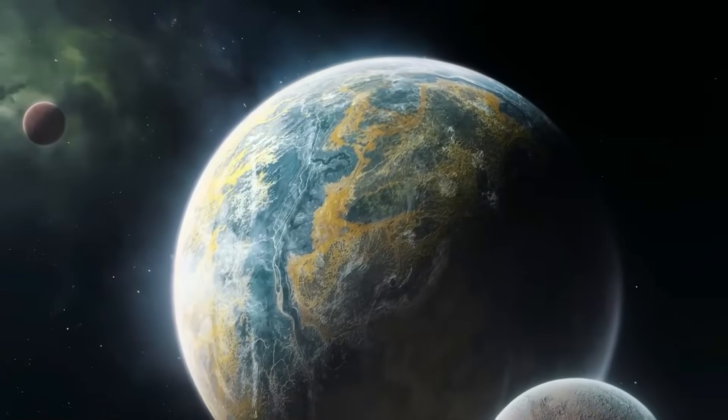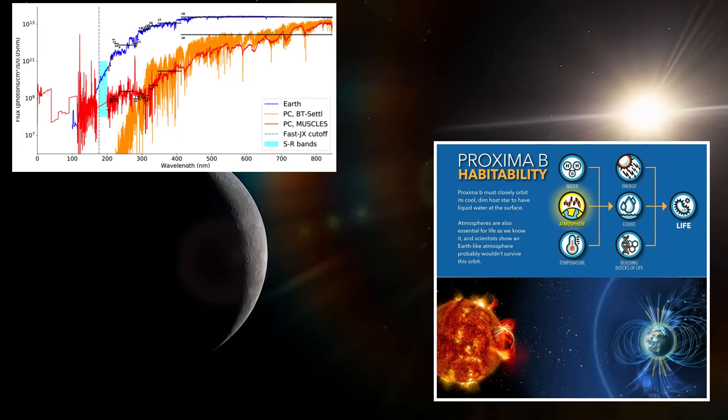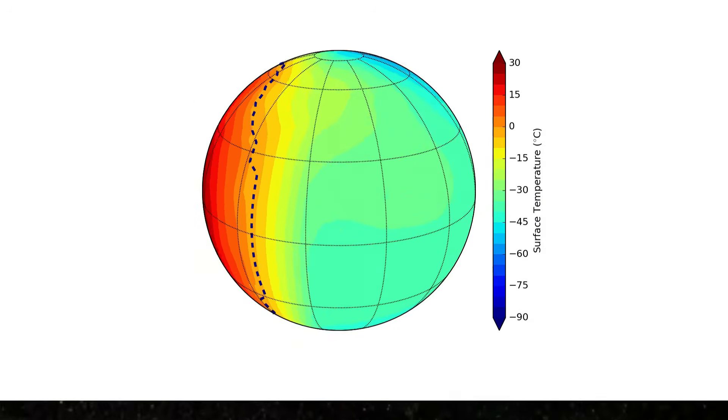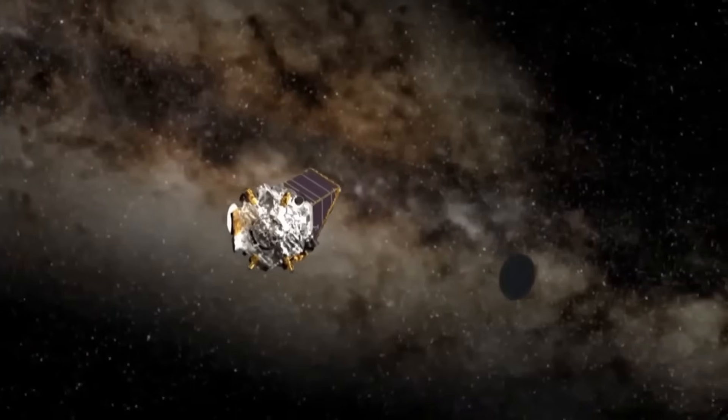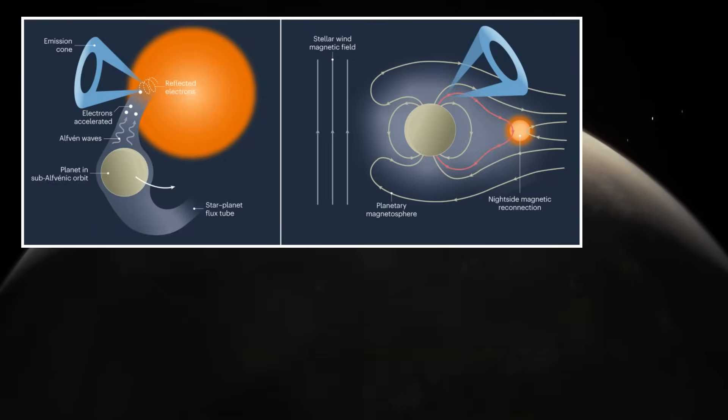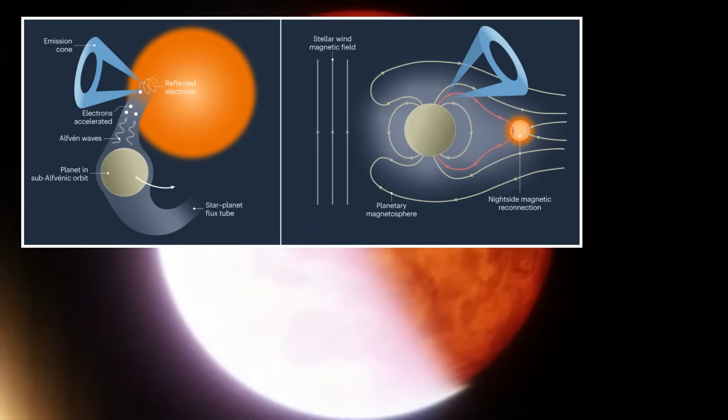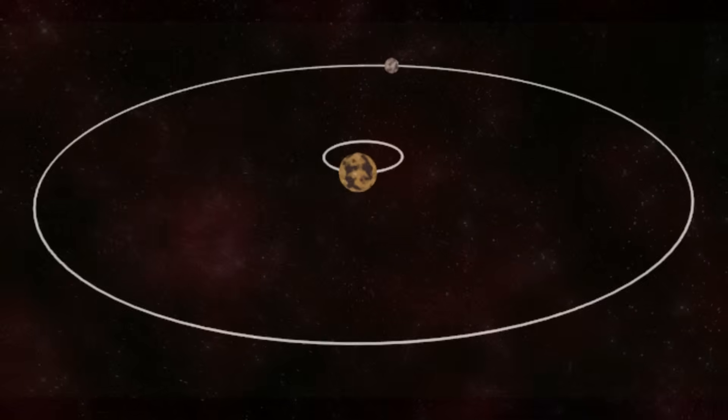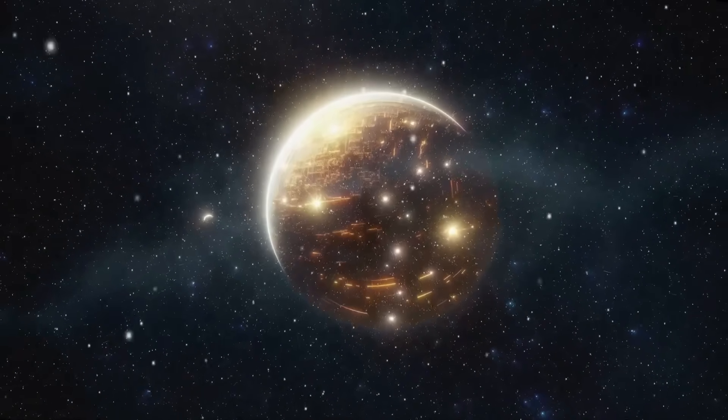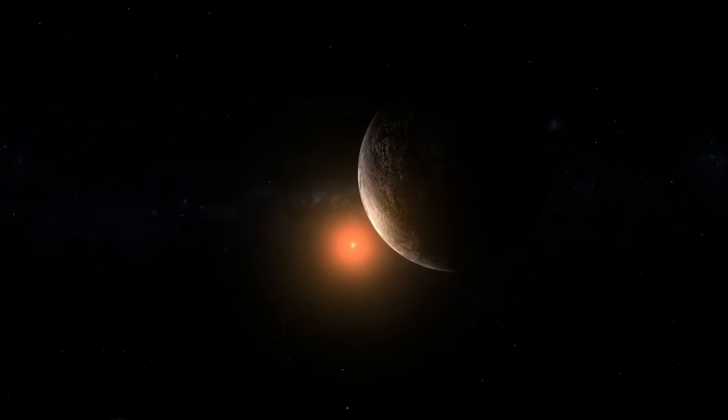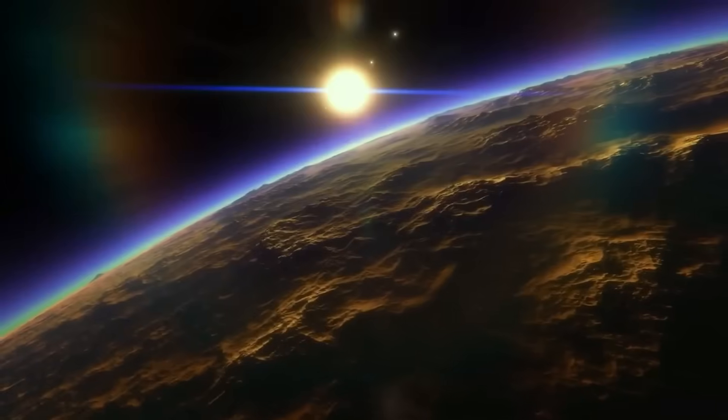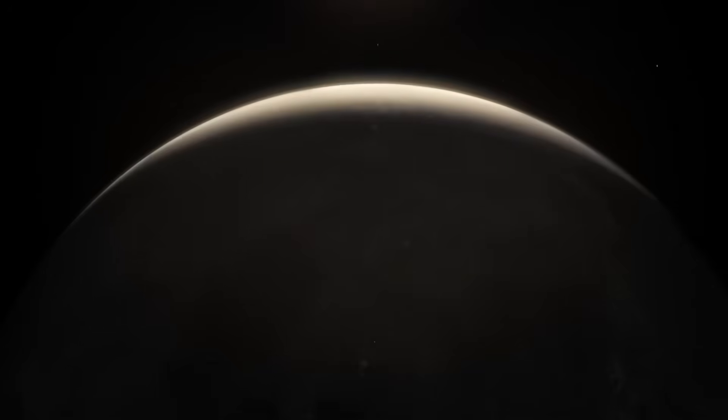This could directly impact the search for habitable worlds, as understanding planetary composition is crucial in assessing whether a planet has the right conditions to support life. Additionally, this anomaly highlights the need for more advanced observational tools. The limitations of current telescopes make it difficult to draw definitive conclusions, reinforcing the importance of upcoming space missions designed to study exoplanets in greater detail. Future telescopes, such as the European Extremely Large Telescope, and NASA's Habitable Worlds Observatory may provide the resolution needed to unlock the secrets of Proxima b's surface. In the long term, this discovery could influence the selection of targets for interstellar exploration.